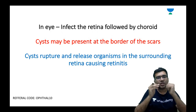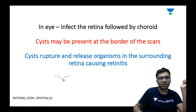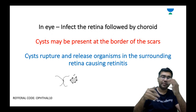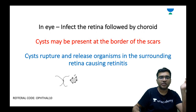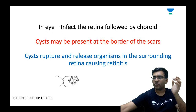Toxoplasma causes cysts, which are present at the border of the scars — chorioretinal scars. These cysts may be indolent and not very active, but they can become active at any point of time. If there are immune changes in the body, this can cause reactivation of the cysts; they rupture and cause inflammation of the surrounding area, leading to vitritis. This is the pathogenesis of ocular toxoplasma infection.